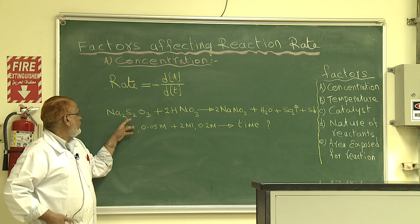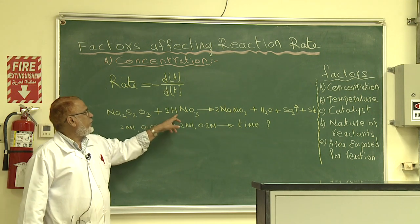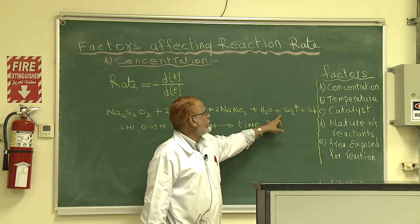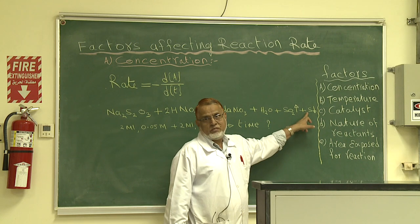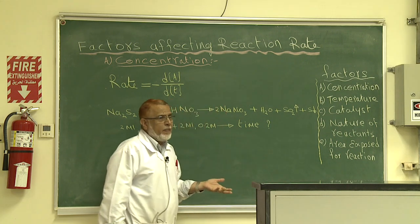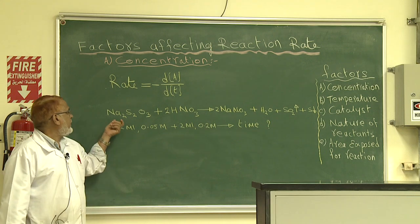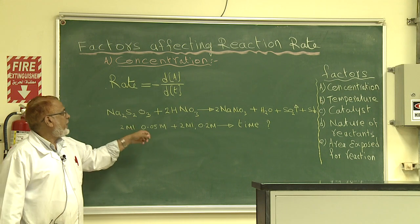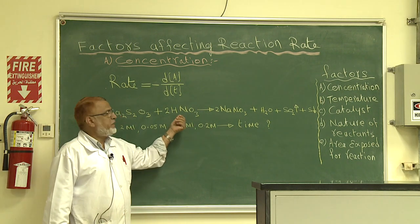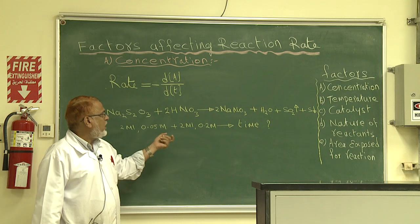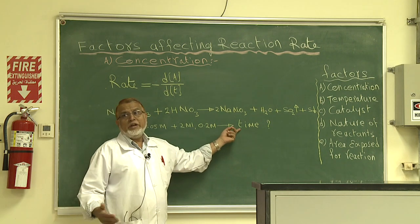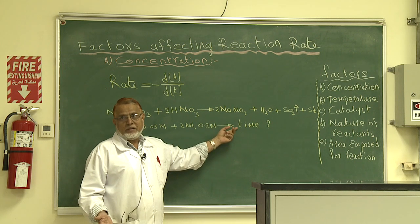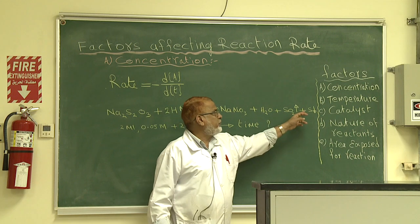For today's experiment, we take sodium thiosulfate and make it react with nitric acid to give sodium nitrate, water, sulfur dioxide, and a yellow precipitate of sulfur. We start with 2 mL of 0.05 M sodium thiosulfate reacting with 2 mL of 0.2 M HNO₃, and we find how much time it takes to complete the reaction. The endpoint is identified by the formation of the sulfur precipitate.